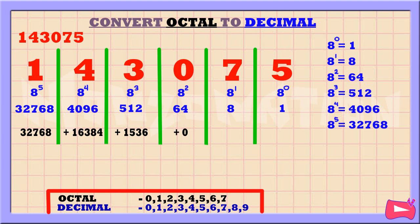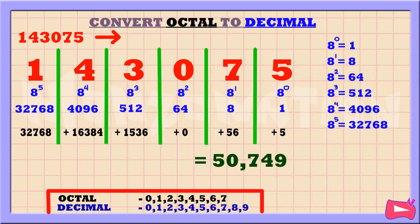Next, 7 times 8 is 56. Then, 5 times 1 is 5. Then, let's add up these numbers. 32768 plus 16384 plus 1536 plus 0 plus 56 plus 5 is 50749. So, the decimal equivalent of 143075 is 50749.